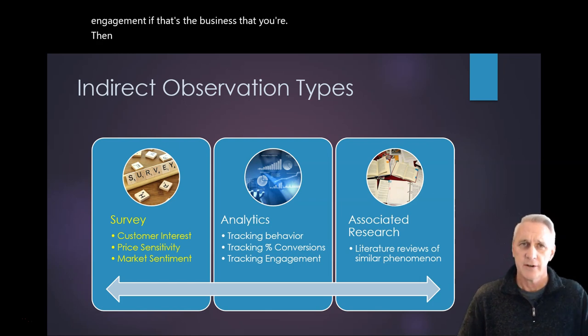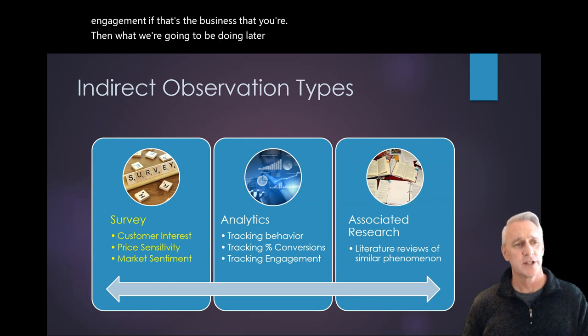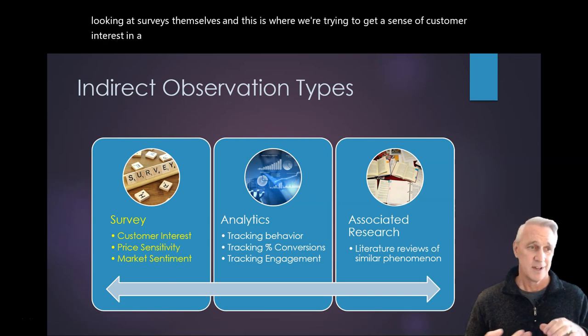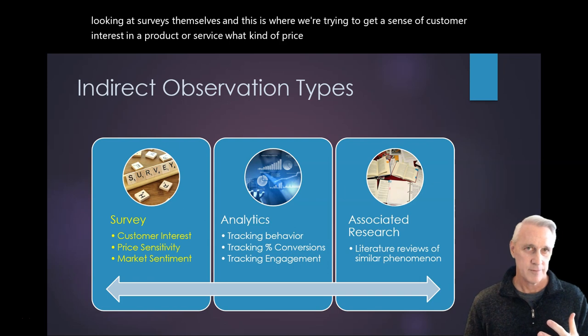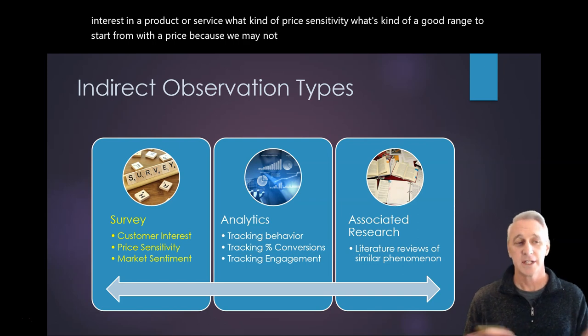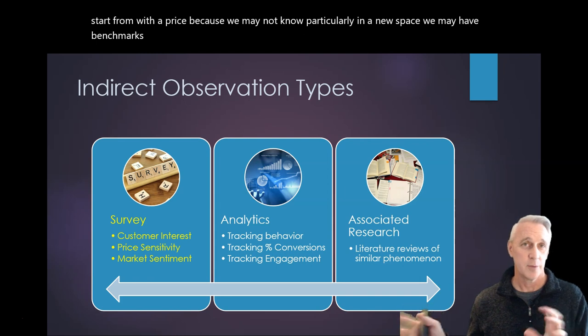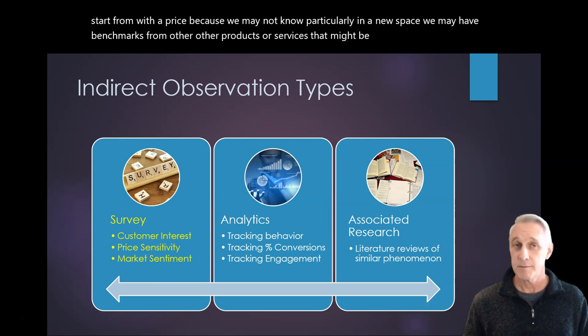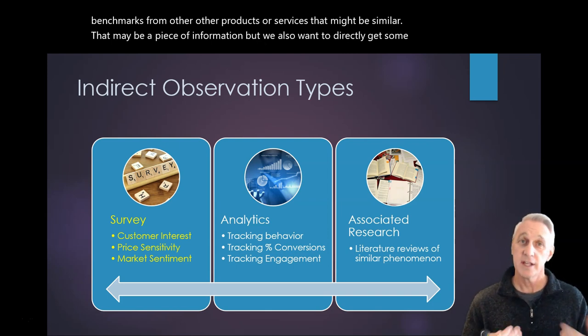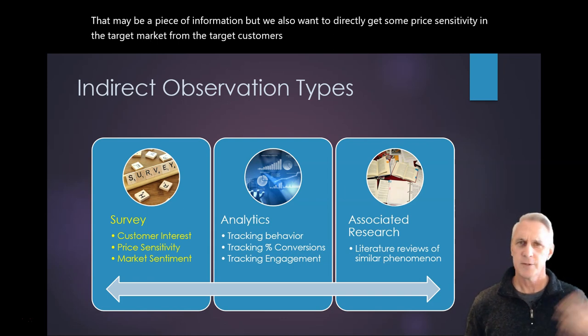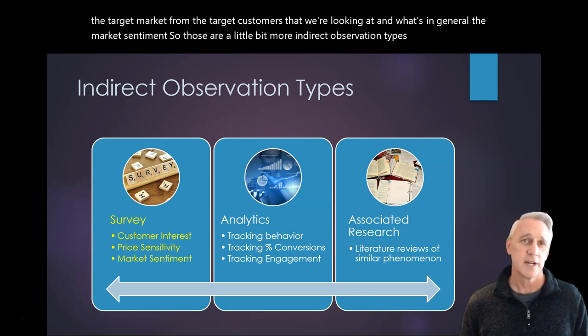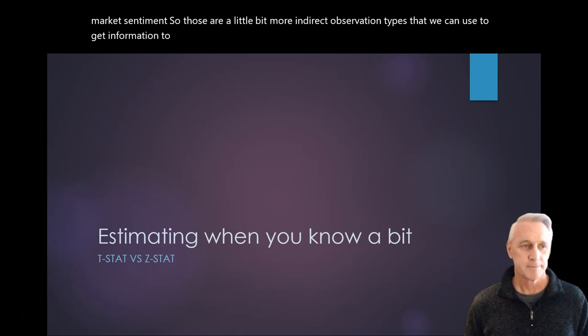Then what we're going to be doing later on in Sprint 3 is we're going to be actually looking at surveys themselves. And this is where we're trying to get a sense of customer interest in a product or service. What kind of price sensitivity? You know, what's kind of a good range to start from with a price? Because we may not know, particularly in a new space. We may have benchmarks from other products or services that might be similar. That may be a piece of information, but we also want to directly get some price sensitivity in the target market from the target customers that we're looking at and what's in general the market sentiment. So these are a little bit more indirect observation types that we can use to get information to help with business cases.